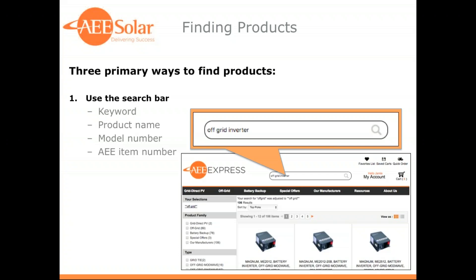Be aware that the returned results depend on whether or not the keywords can be found in either the item name or the description. So in some cases, if the word is a rare word, you're going to limit the amount of results. And if you enter a more common word like 'solar,' you might have many more results than expected. It's really good to be more specific. You can also search by product name, brand, or model number. The most effective way to find exactly what you're looking for is to search the AEE item number, as you would find it in the catalog.